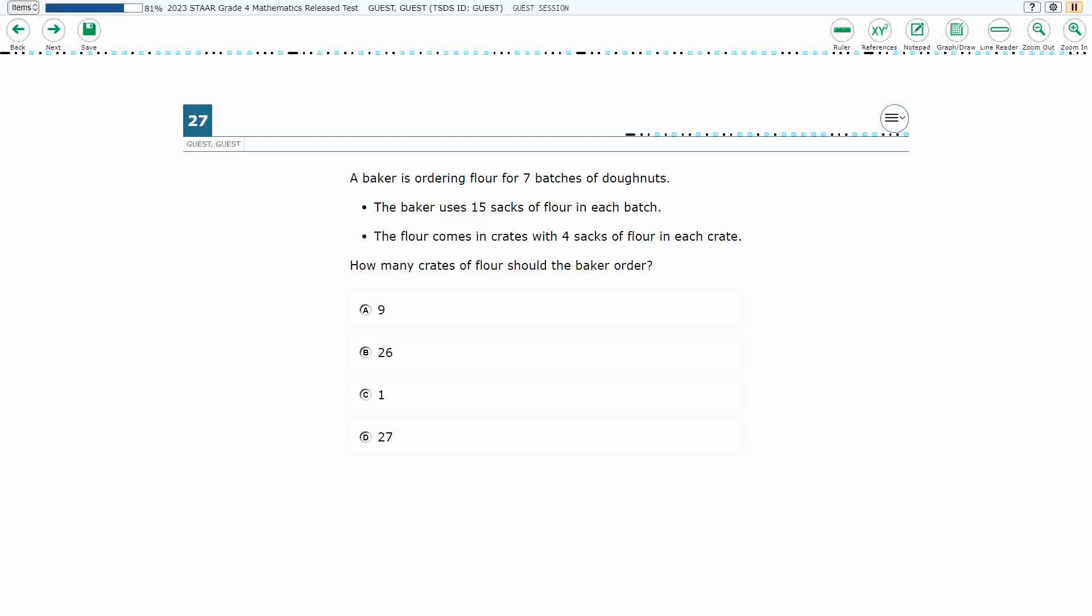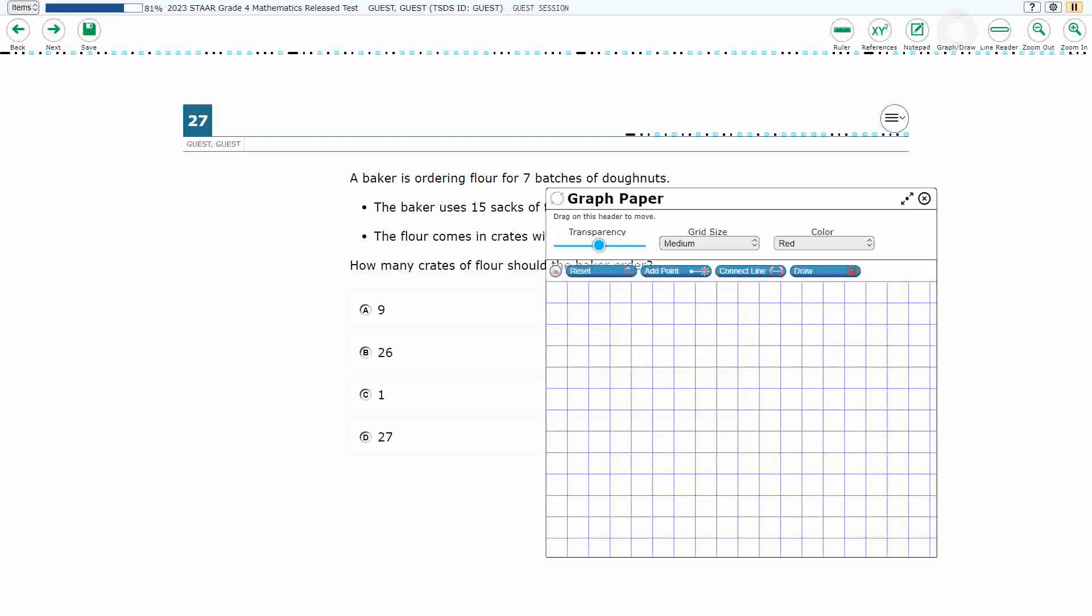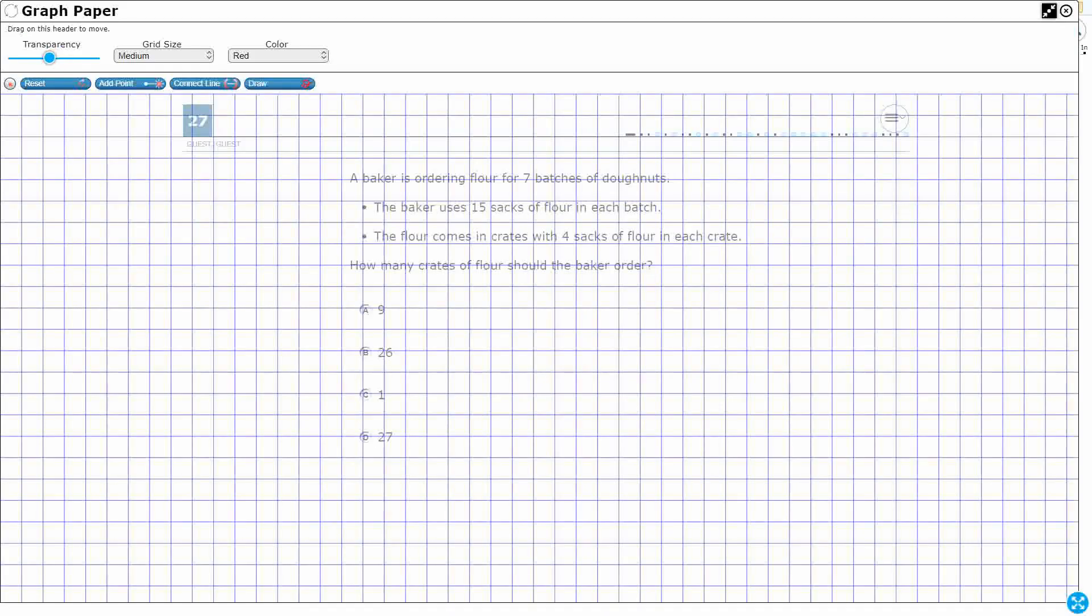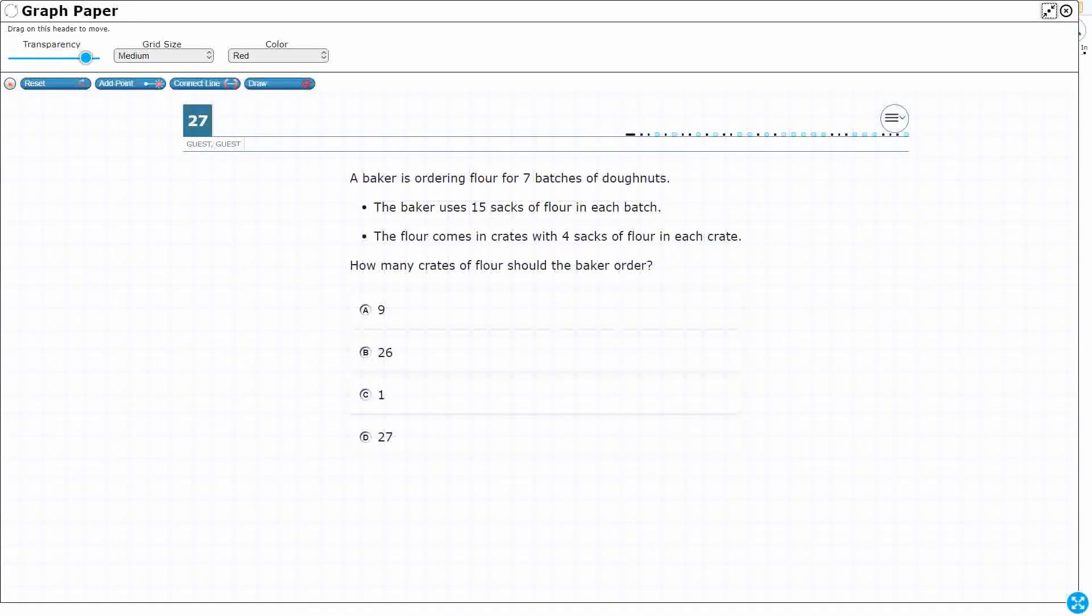So we have a baker here ordering flour for seven batches of donuts. He uses 15 sacks of flour for each batch. Let's draw a little bit before we keep reading.